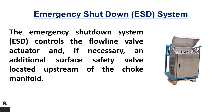The Emergency Shutdown System ESD controls the flowline valve actuator and, if necessary, an additional surface safety valve located upstream of the choke manifold. Additional push-button stations can be located, for example, at the steam heat exchanger, separator, gauge tank, and burner pedestals. The ESD system can be complemented by high or low-level alarms.